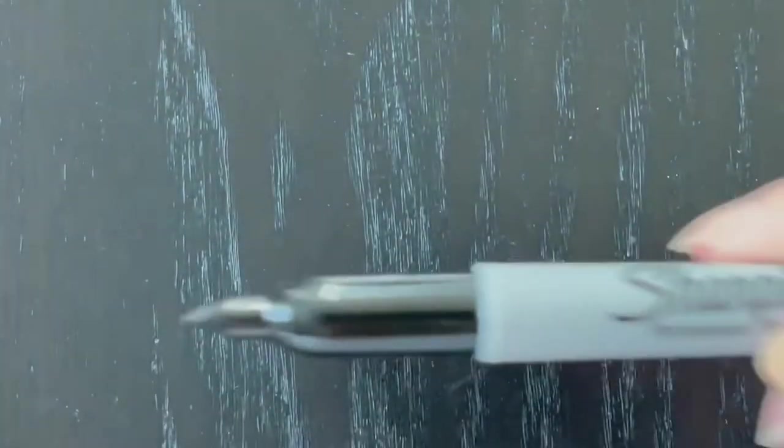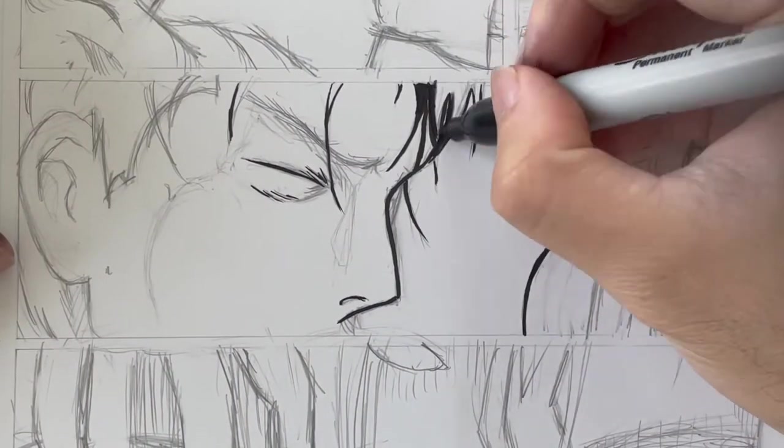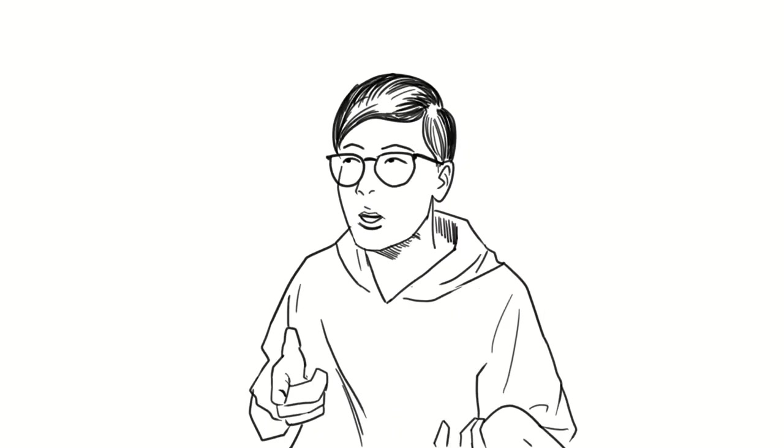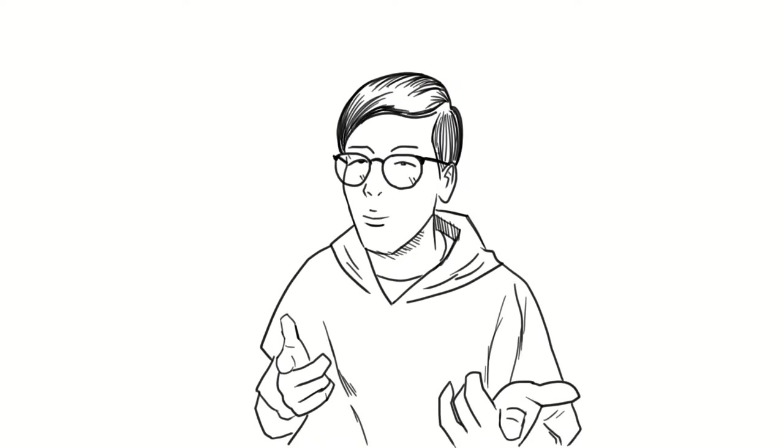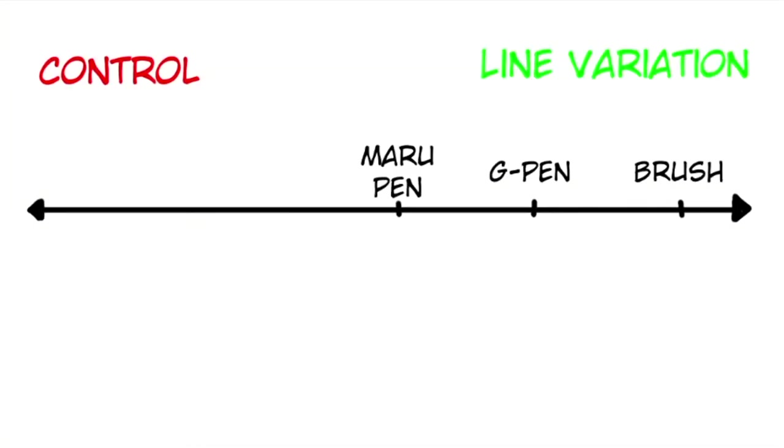Speaking of shading big areas, sharpies and markers are also a cost-effective tool for shading in big areas. Moving on from pens with ink reservoirs, we'll be looking at inking tools that require dipping like nib pens and brushes.